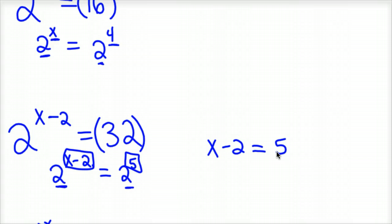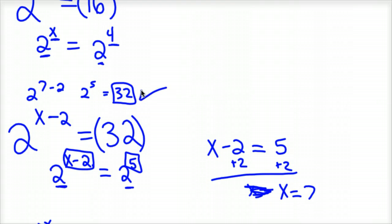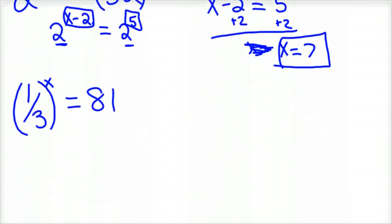So x minus 2 has to be equal to 5 in order to make this work. Add 2 to the other side, and so x has to be 7 in this case. You could plug that back in and see what you'd have. 2 to the 7 minus 2, that's 5, so 2 to the 5th is 32. That checks your answer, so we're good to go there. So x is 7.